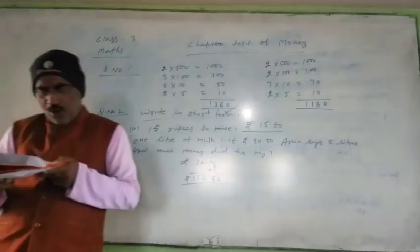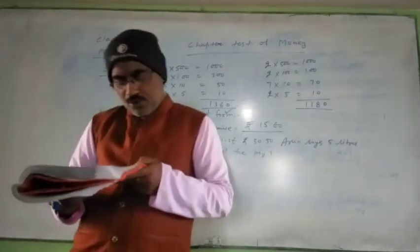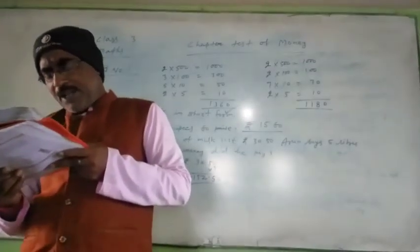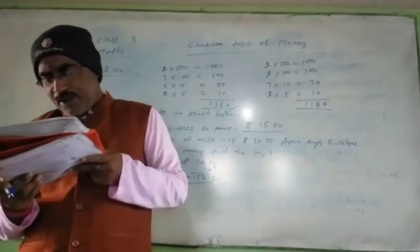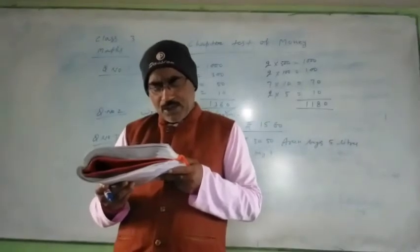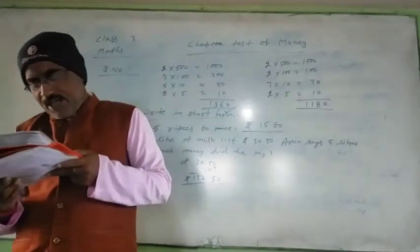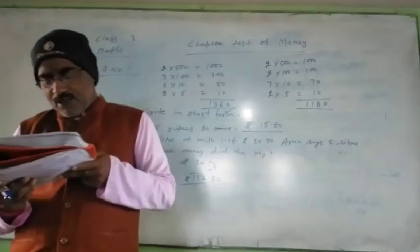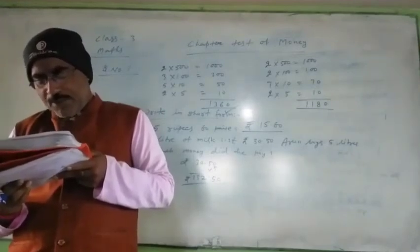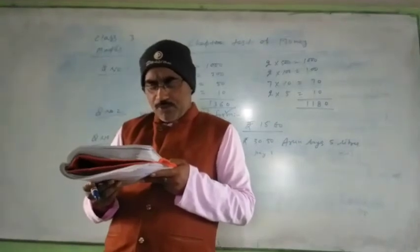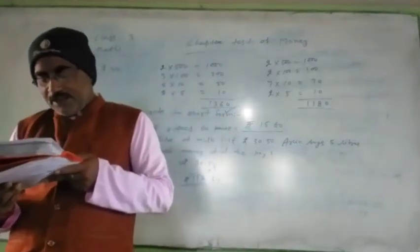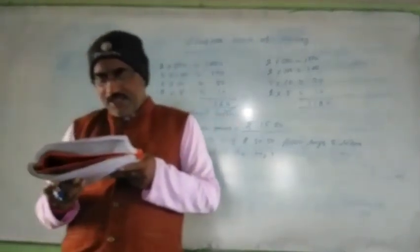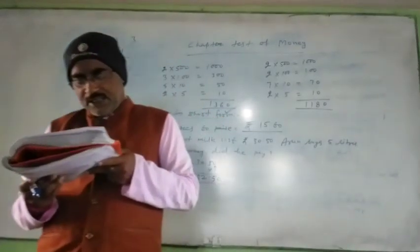Question number 4. Ankita bought a pen for rupees 45.50 and a notebook for rupees 24.75. She gave a 100 rupee note to the shopkeeper. What amount did she get back? My dear students, first of all, you add 45.50 and 24.75. Then subtract the result from 100. The remaining money is your correct answer.